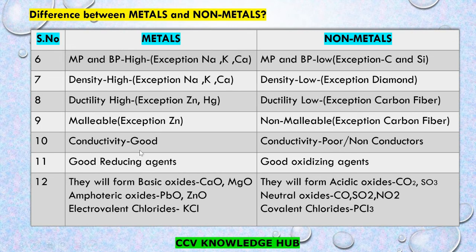Metals are good conductors of electricity due to the presence of free ions. Non-metals are bad conductors or non-conductors of electricity due to the lack of free ions. Metals are good reducing agents because they readily lose electrons. Non-metals are good oxidizing agents because they readily gain electrons.